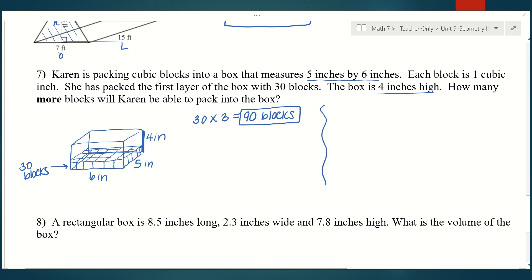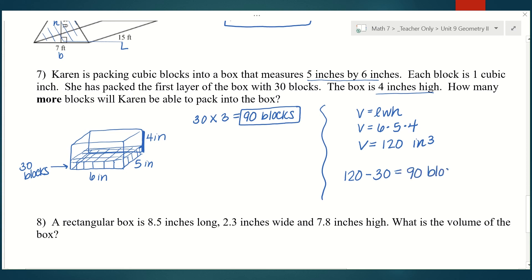Another approach: find the total volume of the box. Volume equals length times width times height: six times five times four equals 120 cubic inches total. Then subtract the 30 blocks already in the bottom layer: 120 minus 30 equals 90 more blocks. Those are two ways to tackle that problem.